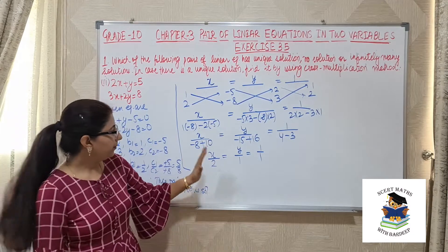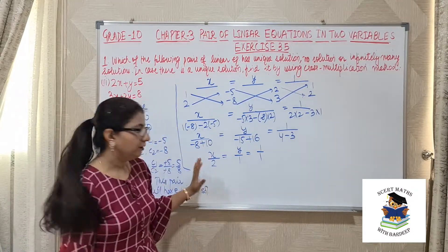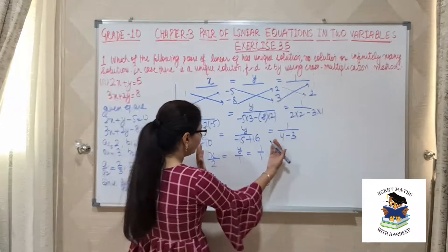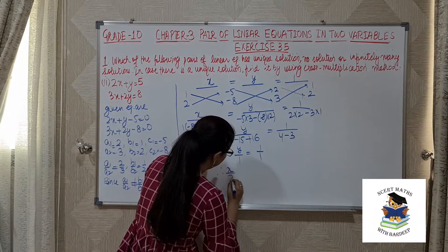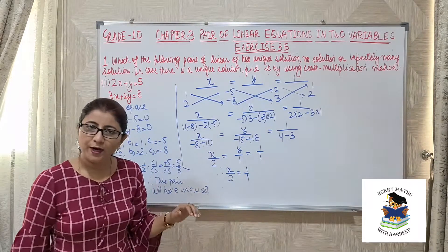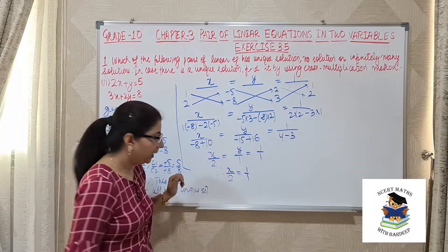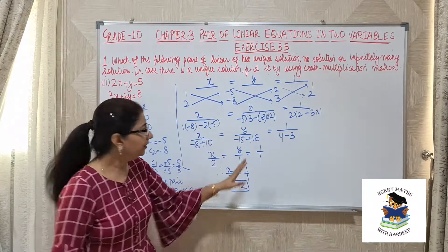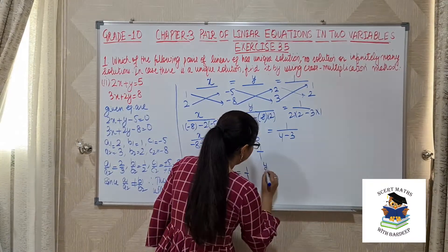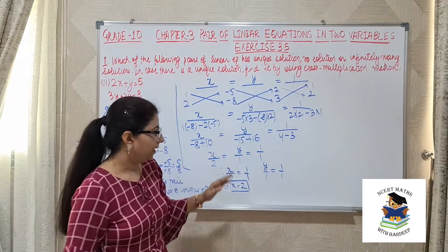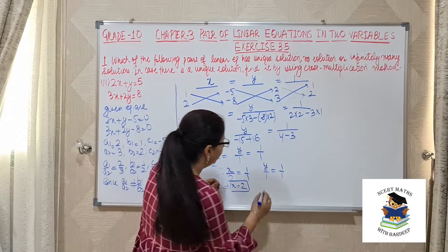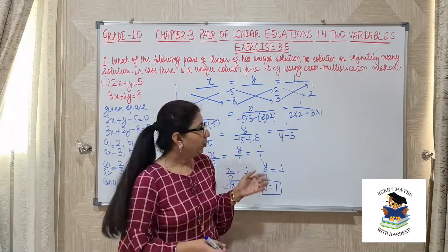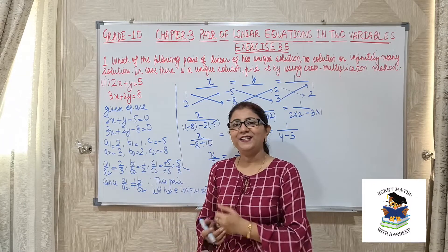After this step, we take the first and last terms to find the value of x, and the second and third terms to find the value of y. Taking first and third: x/2 equals 1/1. Cross multiplying gives x = 2. Taking second and third: y/1 equals 1/1. Cross multiplying gives y = 1. So the second part is clear. Now let's see the next part.